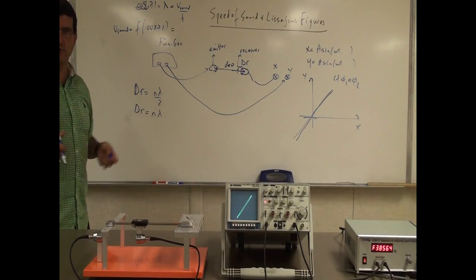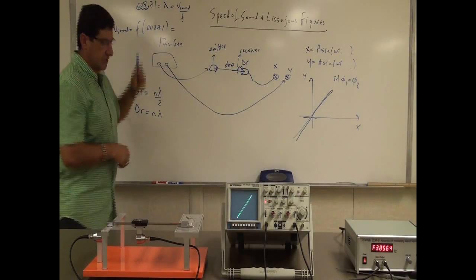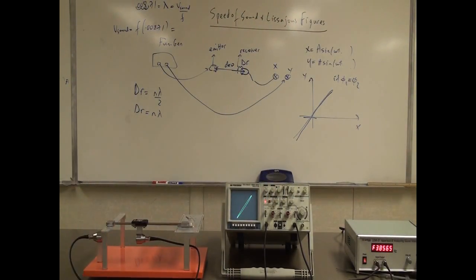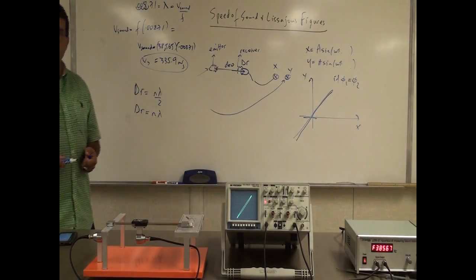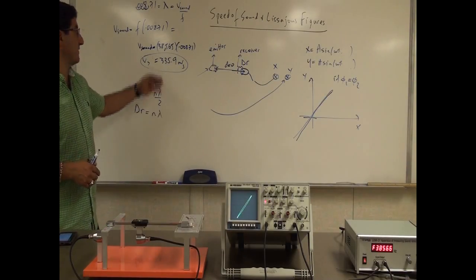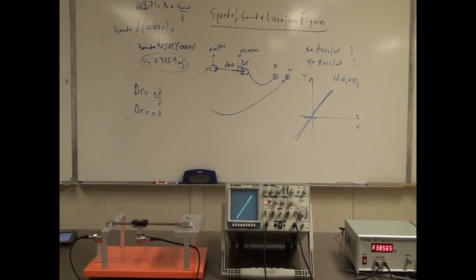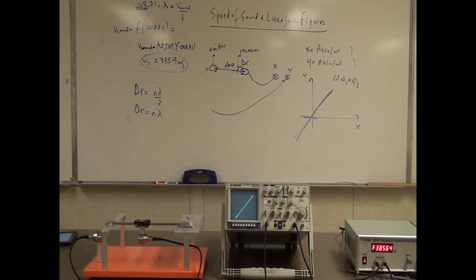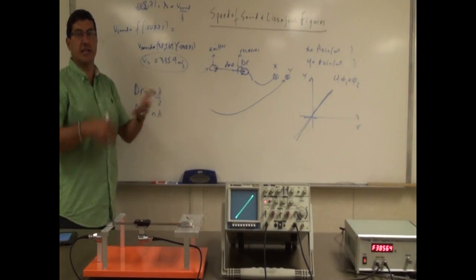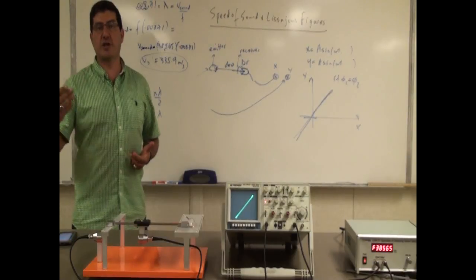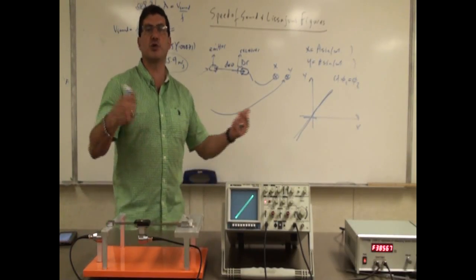Multiplying by the frequency — about 38,564 Hz — gives approximately 335 m/s, which is close to the speed of sound at room temperature of about 343 m/s. In an actual lab, you'd find multiple successive straight-line Lissajous positions, average the results, and compare with the temperature formula: 331.4 × sqrt(1 + T/273) m/s.